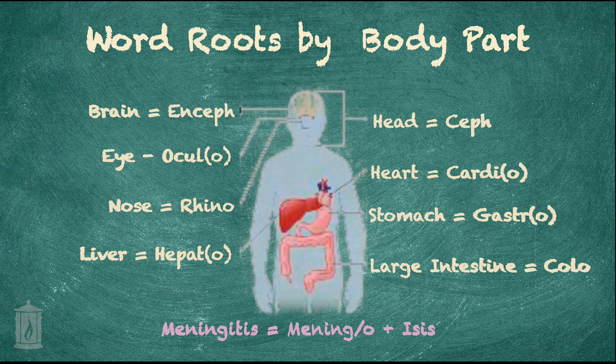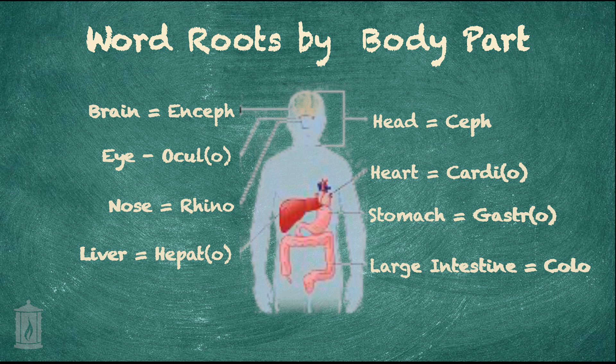As we mentioned before, rhino means nose — like the animal, where the horn is on the nose. If we add suffixes to rhino, we can have various different meanings, whether it be a pathological condition, inflammation, a surgical procedure, or the reconstruction, removal, or rebuilding of. Now if we were to add -rrhea to rhino, we would have rhinorrhea.